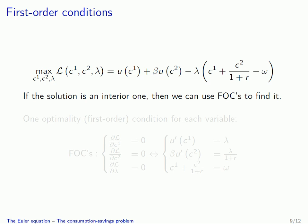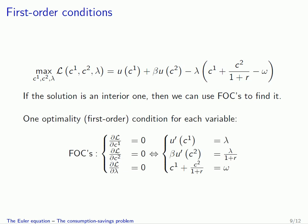If the solution is an interior one, we can use first-order conditions to find it. There is one first-order condition for each variable. The FOC with respect to C1 — dL/dC1 = 0 — gives lambda = u'(C1), where u'(C1) is the marginal utility of consumption in period 1. The FOC with respect to C2 — dL/dC2 = 0 — gives beta·u'(C2) = lambda/(1+R). The FOC with respect to lambda gives C1 + C2/(1+R) = omega, recovering the intertemporal budget constraint.